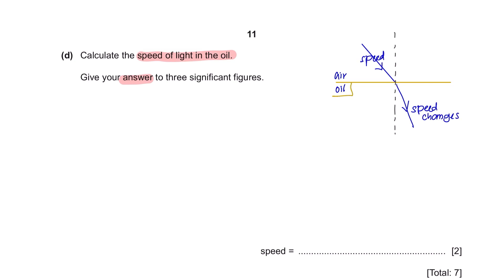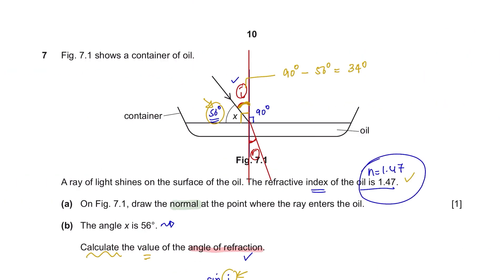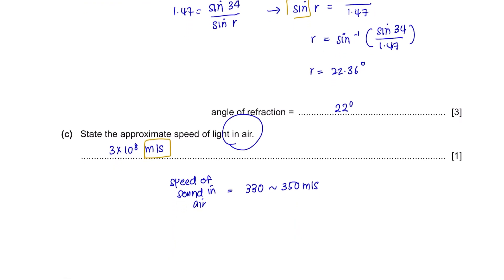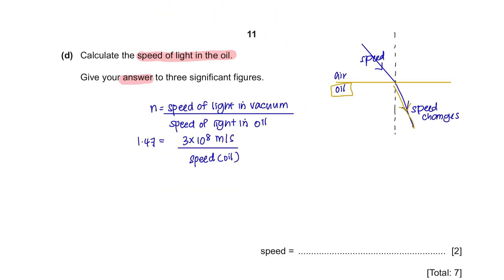To calculate the speed of light in oil, we can use this formula: Refractive index equals the speed of light in vacuum divided by the speed of light in oil. The refractive index is already given here, which is 1.47. And we know that the speed of light in air is 3 times 10 to the power of 8 meters per second. So to find the speed of light in oil, we can just rearrange this equation and get a value of 2.04 times 10 to the power of 8 meters per second. Please do not forget to write your units.